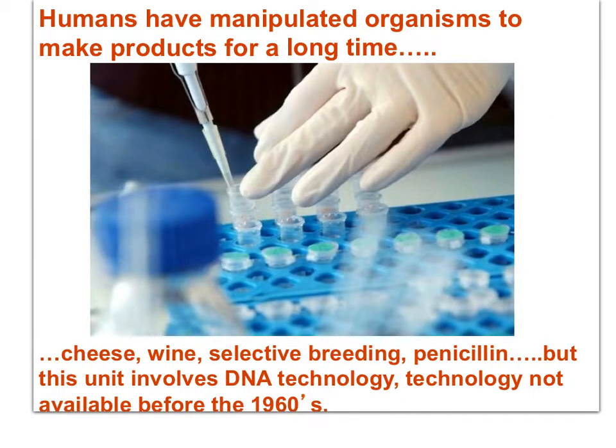Humans have manipulated organisms to make products for a long time — products such as cheese, wine, penicillin, not to mention the selective breeding of plants and animals. But this unit involves DNA technology, technology not available before the 1960s.